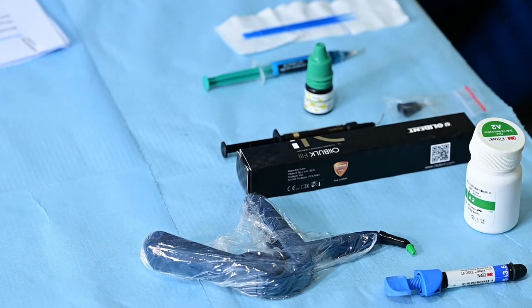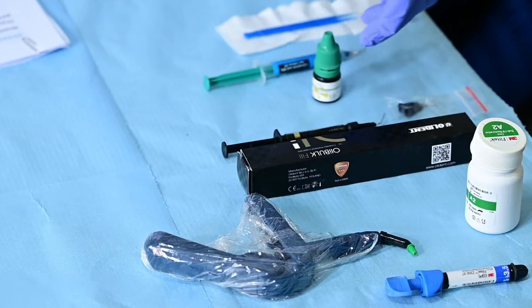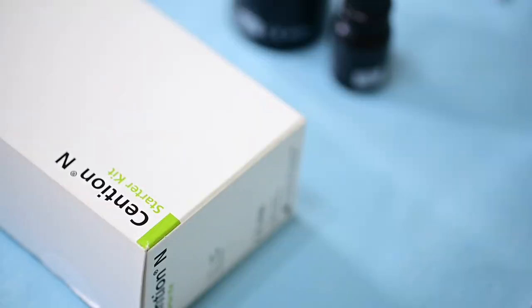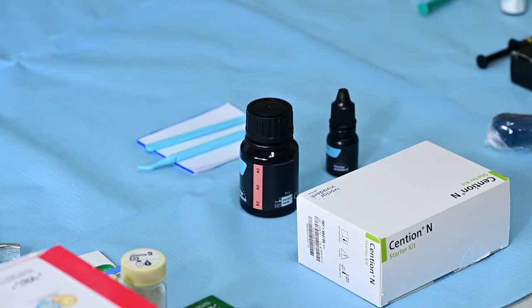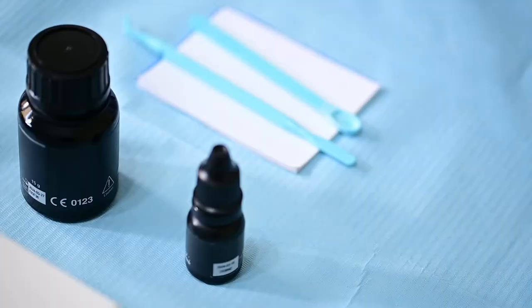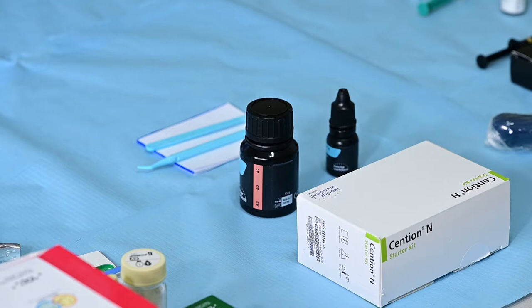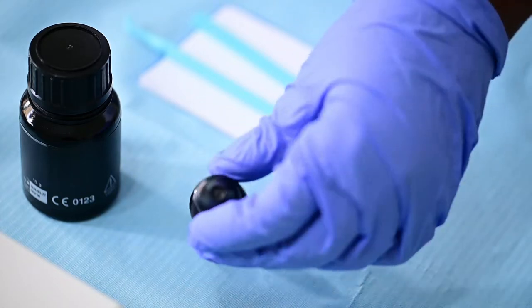As you can see it has a tip for dispensing this material. Then our commonly used bonding agent. After we have manipulated the bulk fill resin composite we will proceed and now handle Cention N. Cention N as we have learned in the lectures is actually a resin composite but then the fillers are alkaline. So it's an alkaline filled resin composite. Cention N was the first and the most used alkaline filled resin composite and so we are going to be manipulating it.